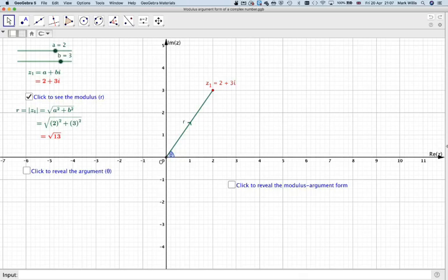Right, so that's the first part of the modulus argument. The modulus argument form's modulus is the length of the straight line, so that's just an application of Pythagoras' theorem. Right, what do we mean by the argument? Well, the argument is this angle here, however, it's defined in a sort of strange way.